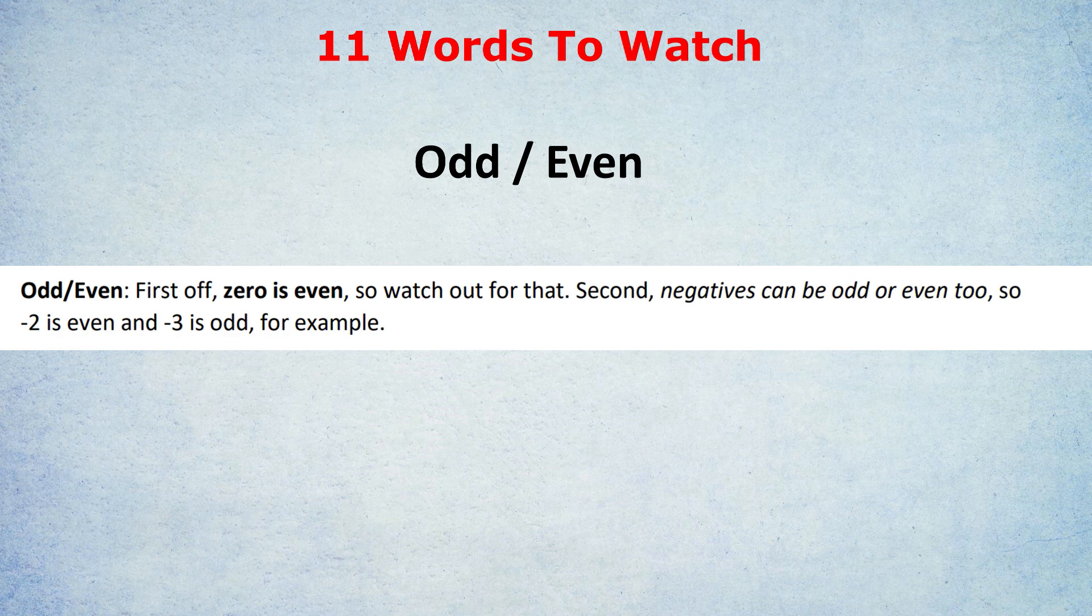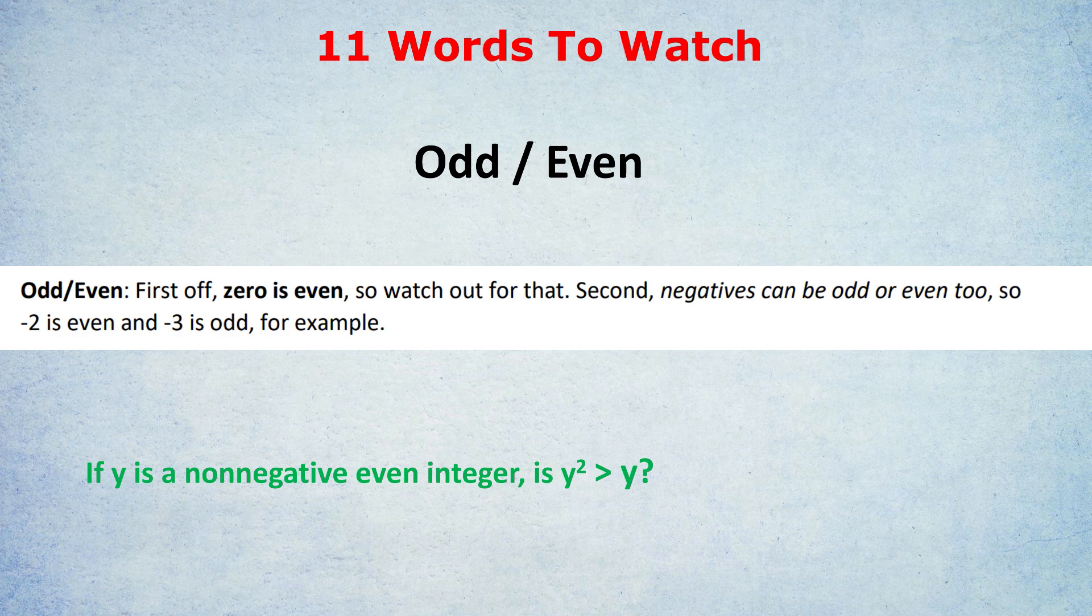How that might be relevant would be in an example like this. If Y is a non-negative even integer, is Y squared greater than Y? The first trigger word, of course, is non-negative. You've learned from earlier today that that includes 0, so that's a prompt to think of 0. But some of you would have hesitated and been like, is 0 even? Well, yes, it is.